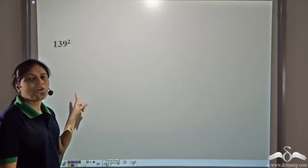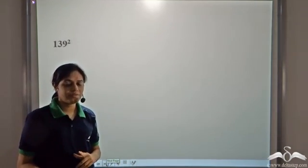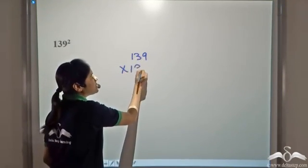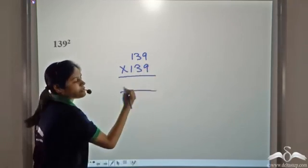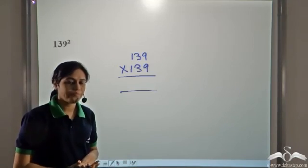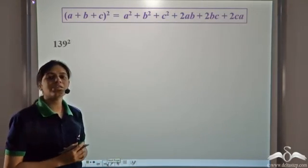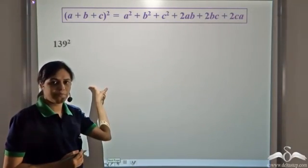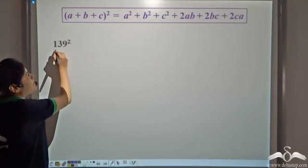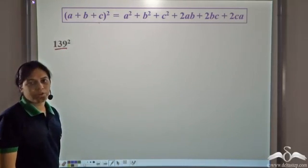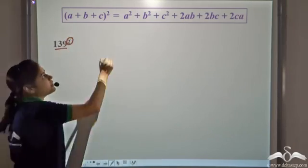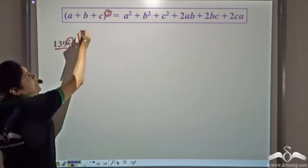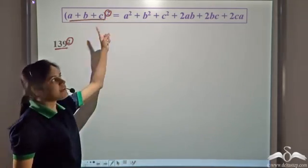Now we need to find the square of 139. One method is 139 into 139 by normal multiplication. But now we have learned this identity — can we apply it to make the calculation simpler? We have 139² and we have (a+b+c)² here. So if we can represent 139 as a plus b plus c, we can use this identity.